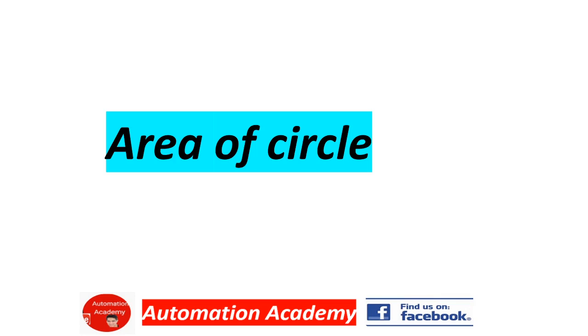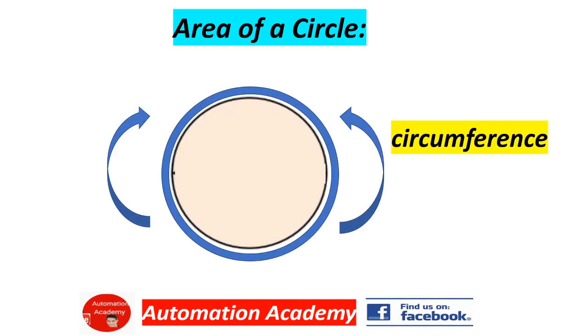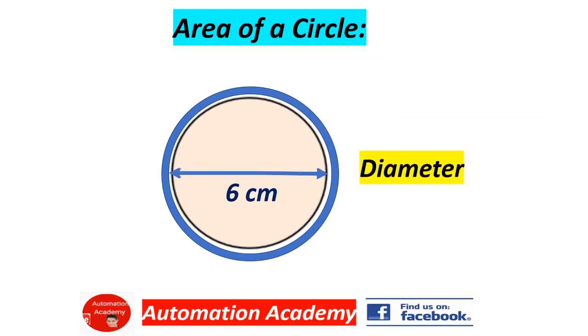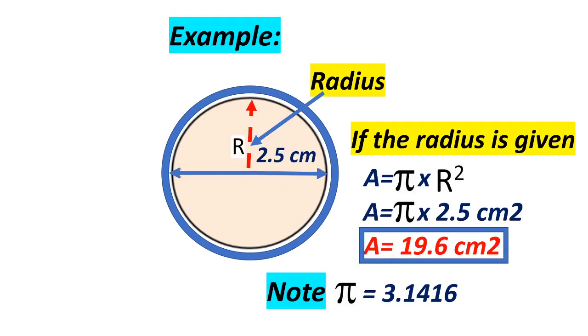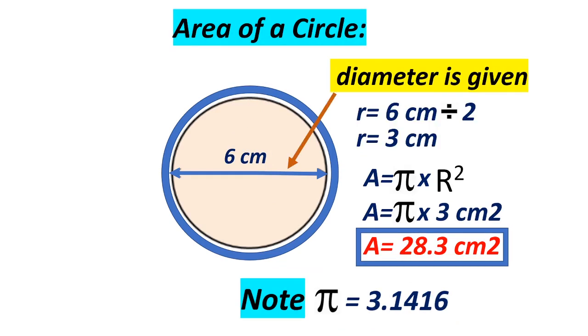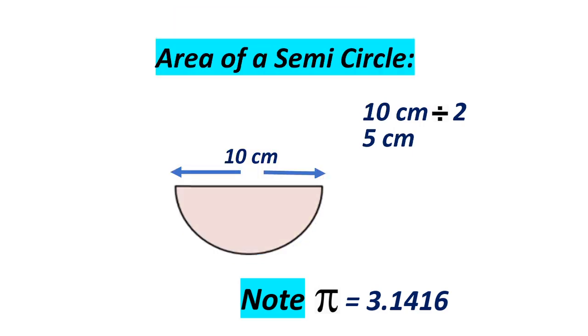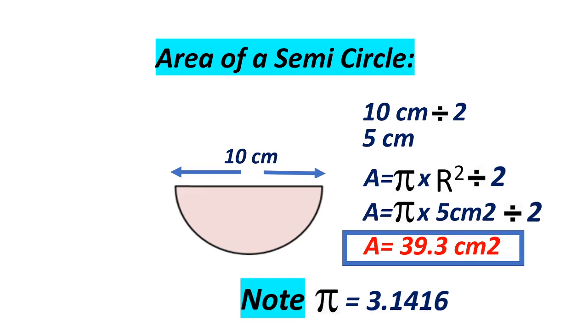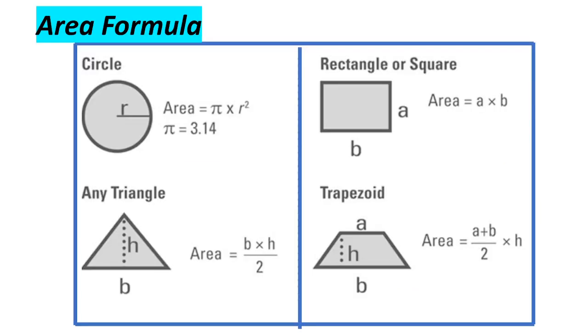Our next topic is area of circle. The round part of a circle is the circumference, and the diameter is 6 cm, and this is the radius. The formula is area equals π times R squared. Our next example, diameter is given: radius equals 6 cm divided by 2, radius equals 3 cm. By using the formula A = πR², area equals π times 3 cm squared, area equals 28.3 cm². Our next example is area of a semicircle. The diameter is 10 cm divided by 2, radius equals 5 cm. By using the formula A = πR², area equals π times 5 cm squared, equals 78.5 cm². Please look here for your additional reference.